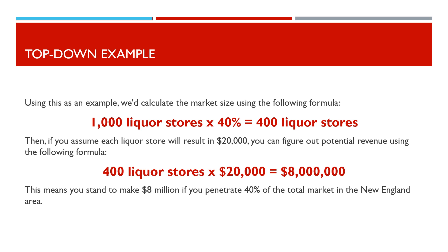Then, if you assume each liquor store will result in $20,000, you can figure out potential revenue: 400 liquor stores times $20,000 equals $8,000,000. This means you stand to make $8,000,000 if you penetrate 40% of the total market in the New England area.